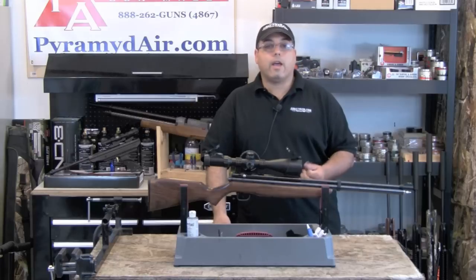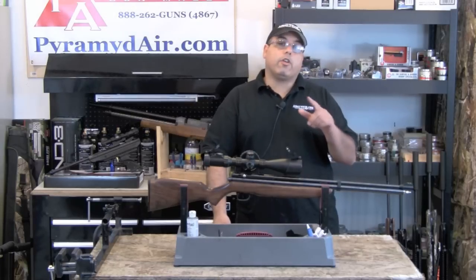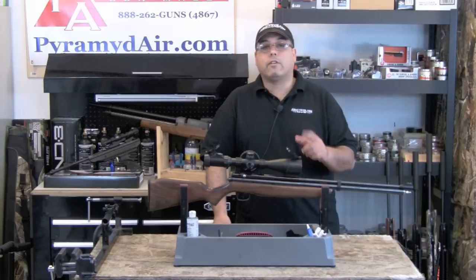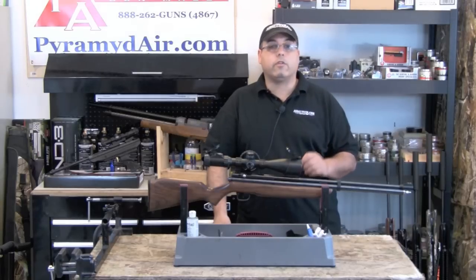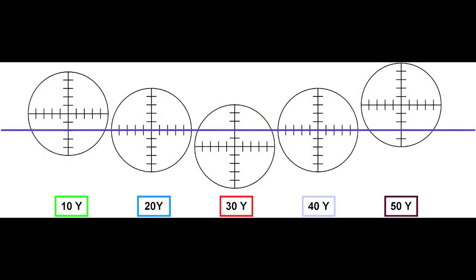Now that you've got all this data, how do you make use of it? You're going to take your mil dot scope and use your mil dots as a guide. You're going to adjust your point of aim to correspond with the mil dot you documented as being closest at the distance you're shooting. Let's review the following image. To hit your target at 10 yards, you're going to aim using the second dot below the center of the scope. At 20 yards, you're going to aim dead center. At 30 yards, you're going to use the second dot above the center of the scope. At 40 yards, you're going to use dead center again. And at 50 yards, you'll aim using the third dot below the center of the scope to adjust for pellet drop.